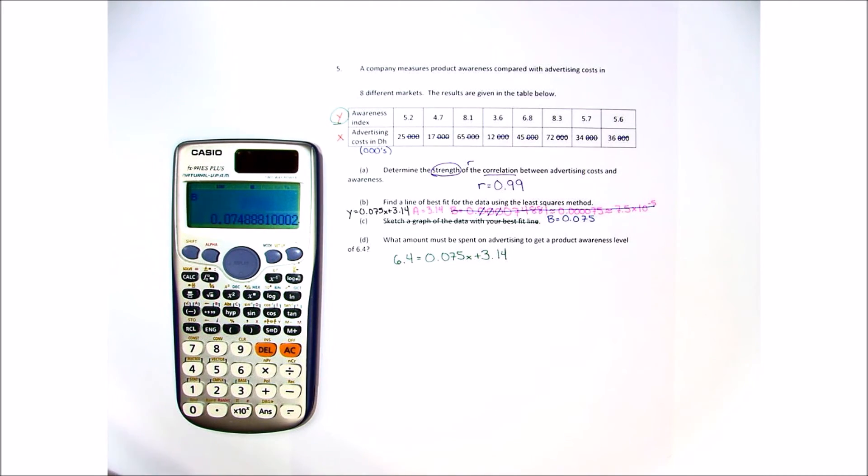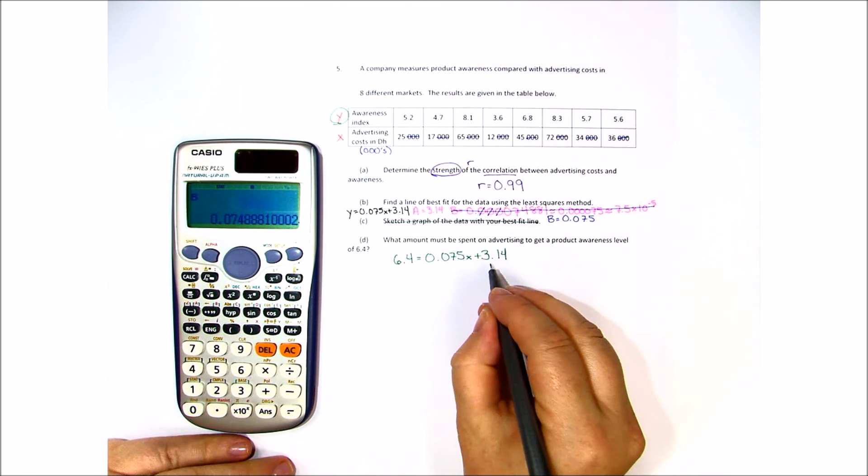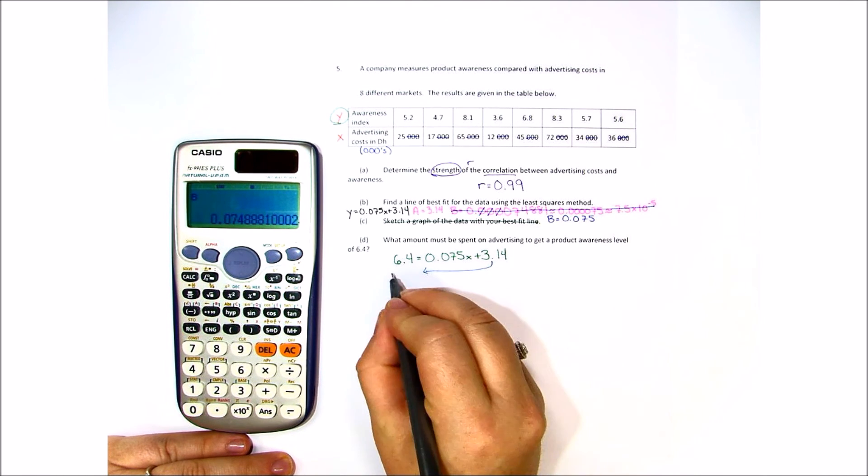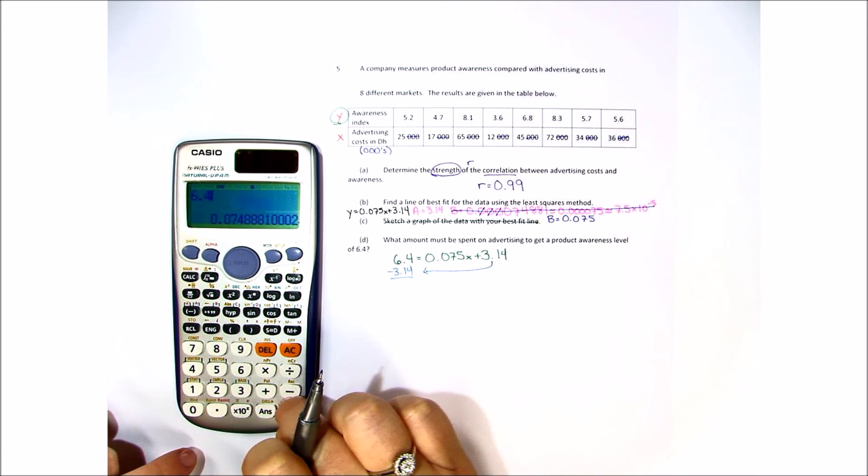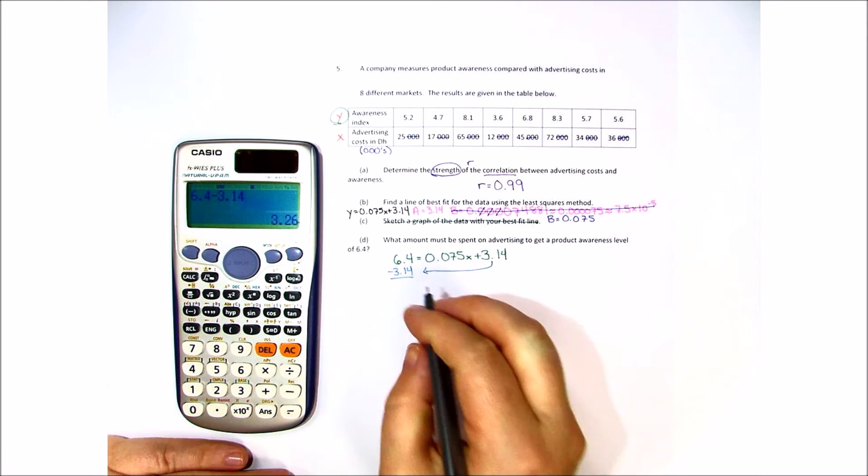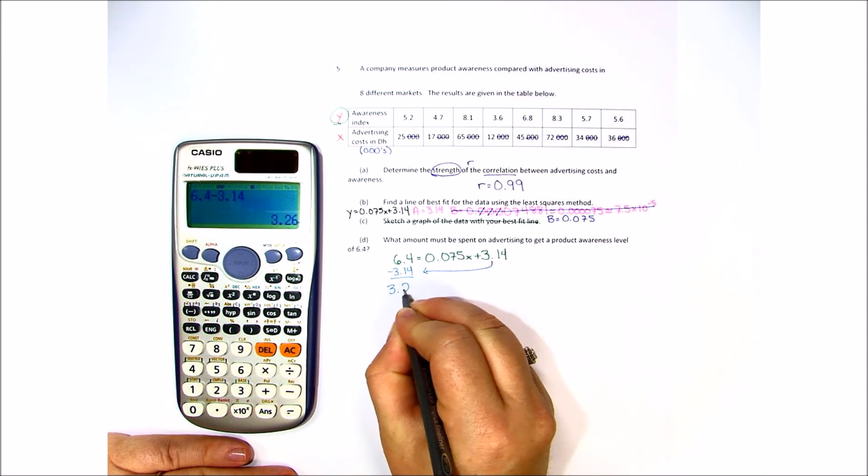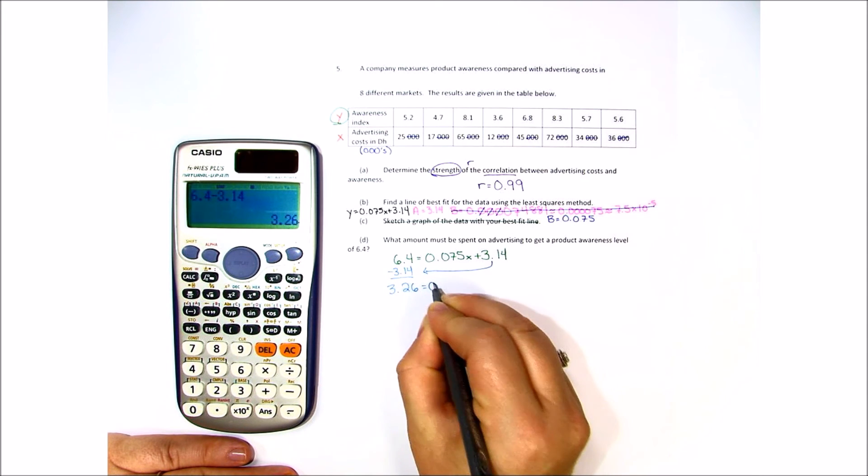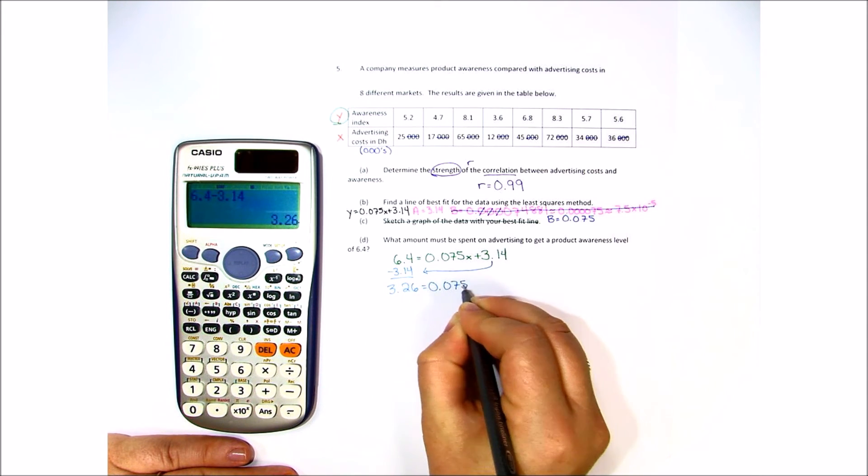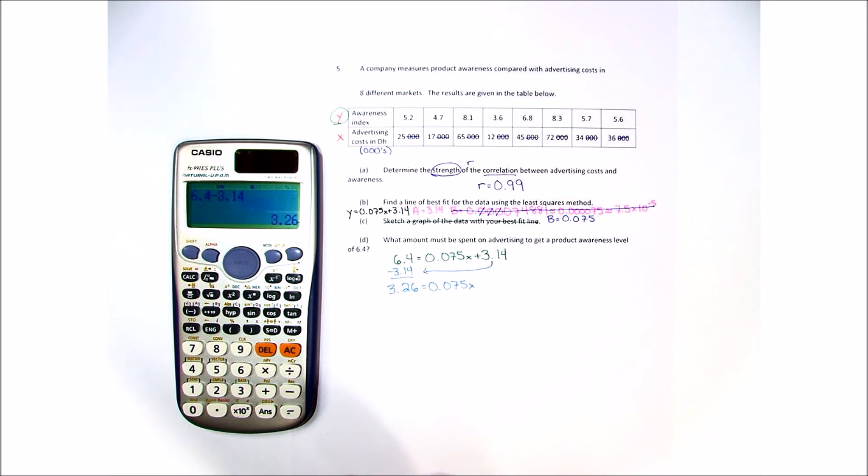So in order to solve this, we need to start by moving the 3.14 over. So I'm going to do 6.4 minus 3.14, and that gives me 3.26 equals 0.075x. Now to solve, because x is being multiplied, we need to divide by the same number.